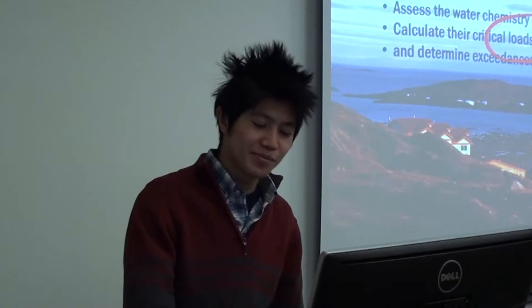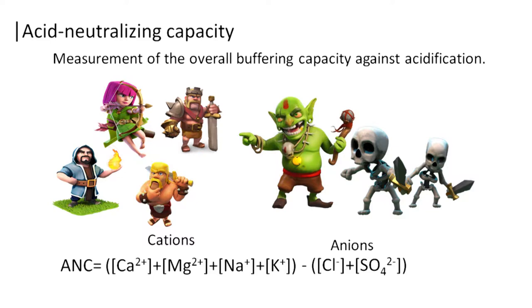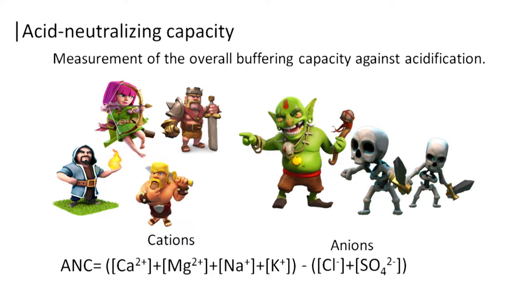So what are critical loads? First, we've got to understand acid neutralization capacity, which is the measurement of the buffering capacity against acidification. This is done through water chemistry and lots of equations. But in general, the acid neutralization capacity is the sum of cations and anions. We can think of these as the good guys and the bad guys. Lakes with higher buffering capacity have a lot of good guys that are able to neutralize the bad guys — excess anions that cause acidification.